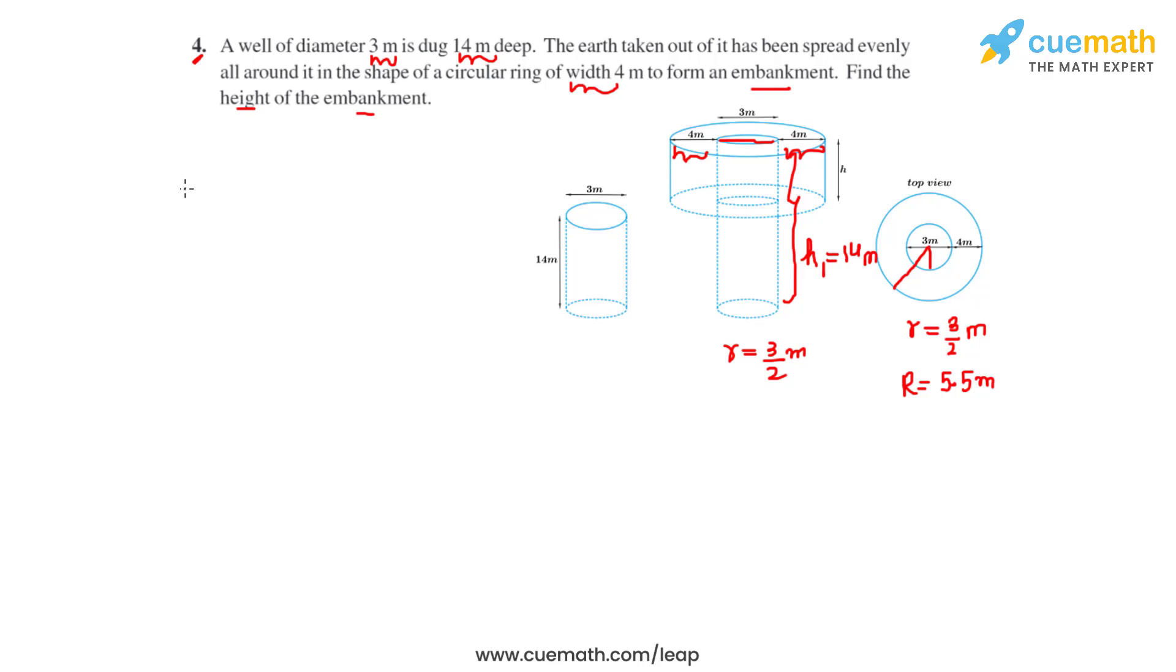earth dug out, which equals the volume of the cylindrical well, is found using the formula πr²h₁. This equals the volume of the embankment. The volume of the embankment is found by subtracting: πR²h - πr²h, where h is the height of the embankment. As we see, π is common on both sides, so we can cancel it out.